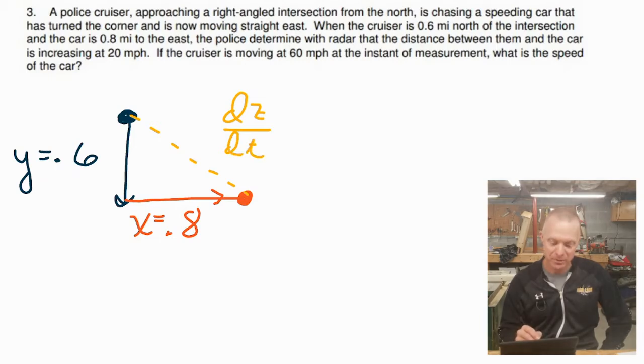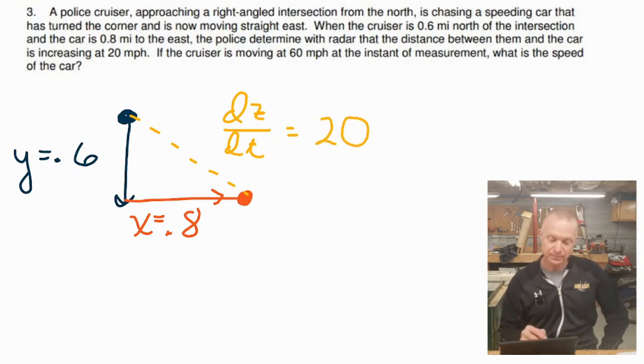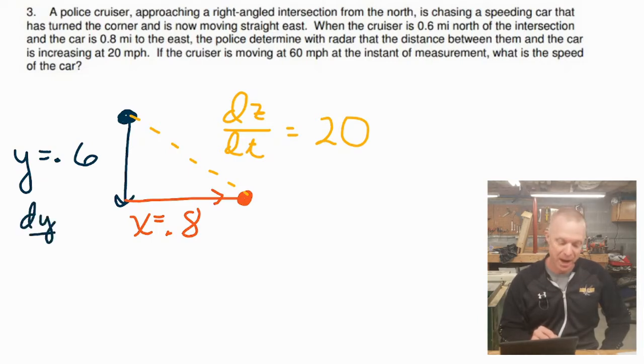Do you see what I'm getting at here? We're looking to label 20 as some type of DT. Now, typically, the third dimension, the hypotenuse of right triangle, we would label with a Z. So I'm going to go ahead and call the speed DZ DT. Remember, the D stands for derivative or change. And so the change in the hypotenuse over the change in the time is 20. Are you feeling like there's something else you can label with a DT? Right, it's the police cruiser. Okay, so that's the change in Y. You can call that DY DT. That's the 60.